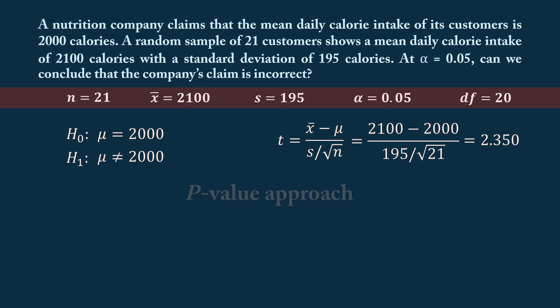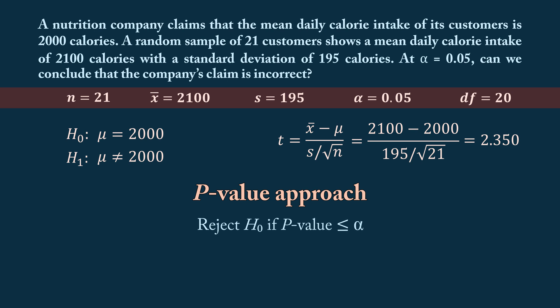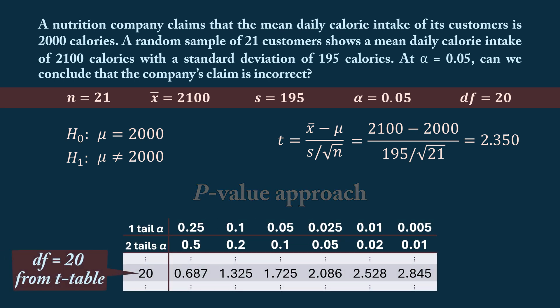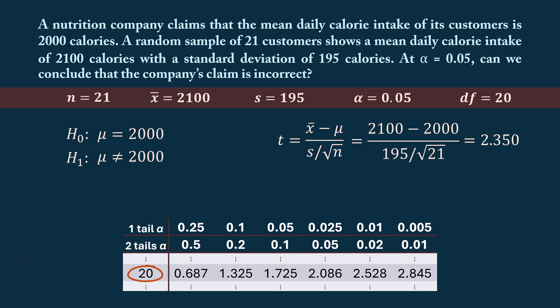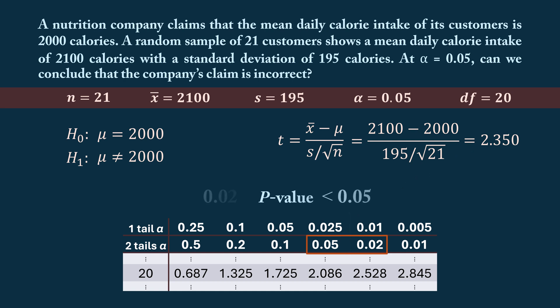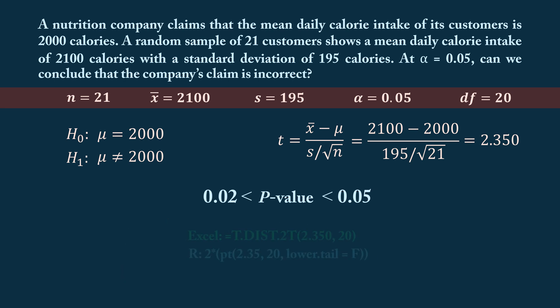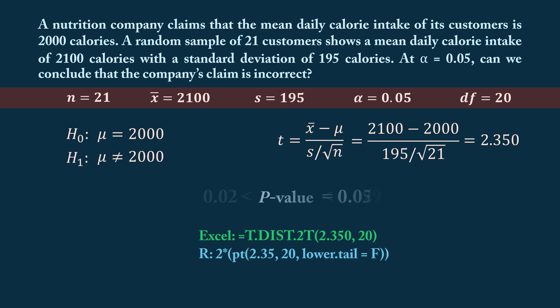We can also use the p-value approach to make decisions about the null hypothesis. We reject the null hypothesis if the p-value is smaller than a specified alpha. While we cannot determine the exact p-value from the table, we can estimate it by going to degrees of freedom 20 and determining where the test statistic 2.350 falls. Since 2.350 falls between 2.086 and 2.528, corresponding to two-tailed alpha levels of 0.05 and 0.02, we estimate the p-value is less than 0.05 but greater than 0.02. Using software, we find the exact p-value to be 0.029.